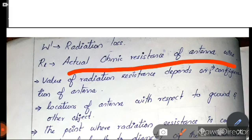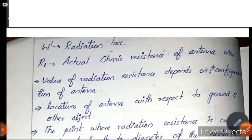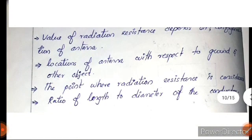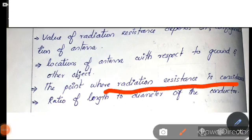The value of radiation resistance depends on several factors. The first factor is the configuration of the antenna. The second is the location of the antenna with respect to ground and other objects. The third is the point where radiation resistance is considered, and the last one is the ratio of length to diameter of the conductor.